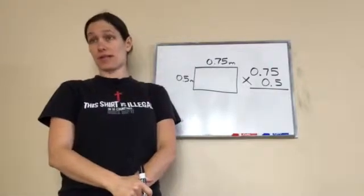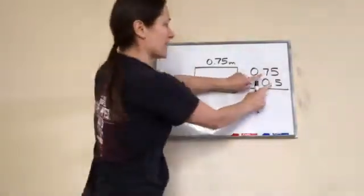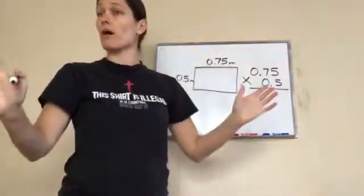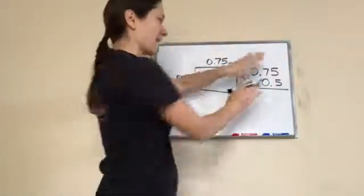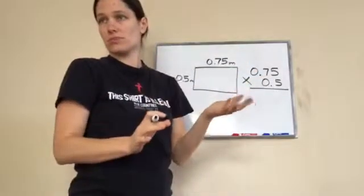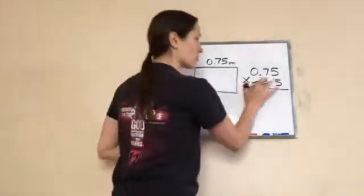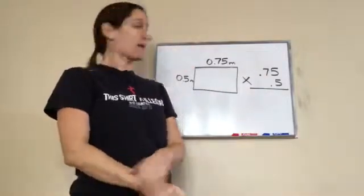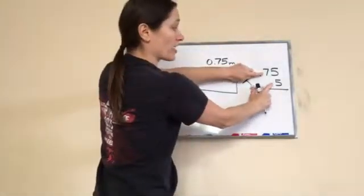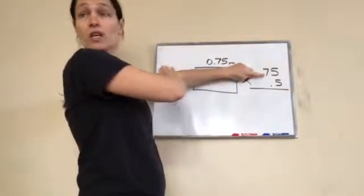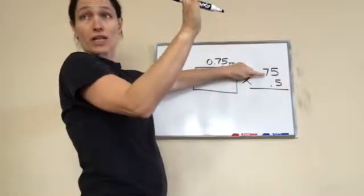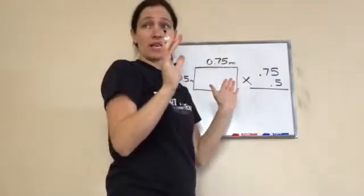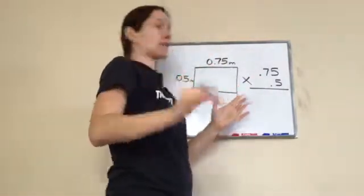You're exactly right. You just pretend like the decimals aren't there and you write the number just like you would any other problem. You don't even have to have the zeros if you don't want to. You pretend like the decimals aren't there and write your numbers just like you would any normal whole numbers. The decimals are there but you don't do anything with the decimals until the very end.